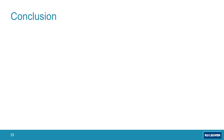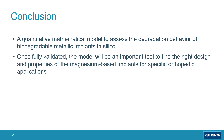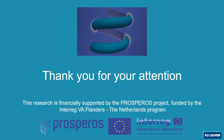In conclusion, I showed you how we developed a quantitative mathematical model to assess biodegradation prior to going for any in vivo or in vitro experiments. Once fully validated, this model can be used to assess the right design and properties of magnesium or any other type of metallic implant material for specific applications — here, specifically for orthopedic applications. Thank you for your attention.